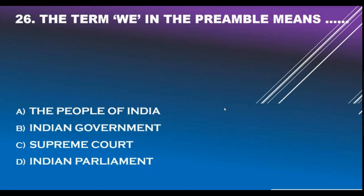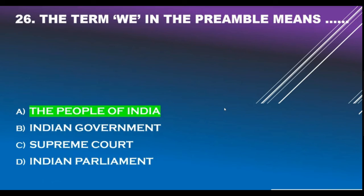Question number 26. The term 'We' in the Preamble means: Option A - The people of India. Option B - Indian government. Option C - Supreme Court. Option D - Indian Parliament. Correct answer is Option A: The people of India.